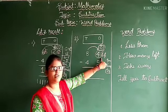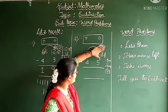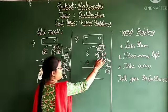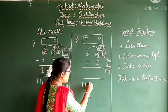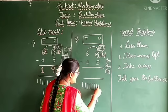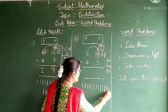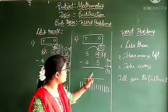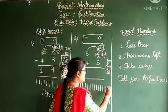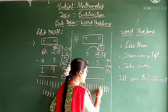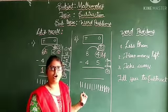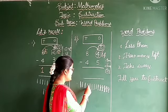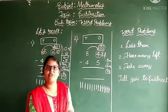Now take the difference between 14 minus 5. Keep 14 lines, strike out 5 lines — 1, 2, 3, 4, 5. Now check how many lines are remaining: 1, 2, 3, 4, 5, 6, 7, 8, 9. There are 9 lines left.